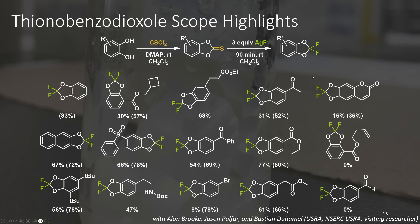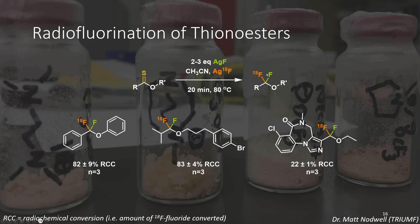Earlier in this presentation, I mentioned the use of silver(I) fluoride for radiotracers. We worked with our collaborators at Triumph — Dr. Matt Nodwell conducted these experiments — and we were able to demonstrate that 18F silver fluoride was able to generate radiofluorinated products with fair radiochemical conversion. We were quite excited to see that this chemistry actually worked with 18F silver fluoride rather than 19F silver fluoride.